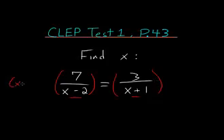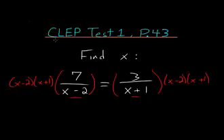So multiplying each side by this x minus 2, x plus 1. Notice on the left-hand side that x minus 2 in the numerator cancels out with x minus 2 in the denominator, and on the right-hand side, the x plus 1 in the denominator cancels out with the x plus 1 in the numerator.